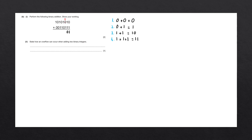The third bit we have now is 1 plus 0 plus 1. This can be simplified to 1 plus 1, which is our third rule, and again we have 10. Let's write down 0 underneath that bit, and we'll carry over the 1, writing 1 above the next bit.